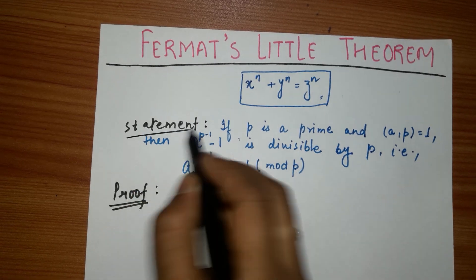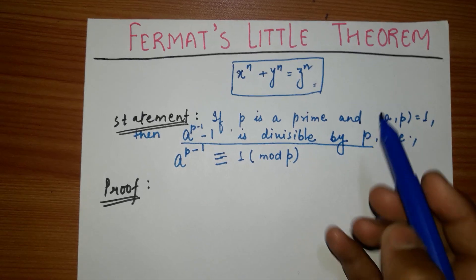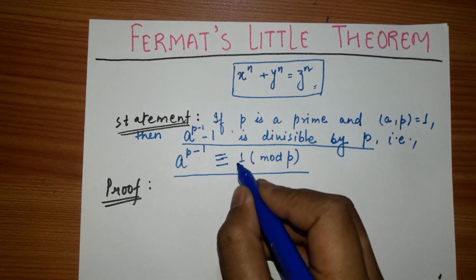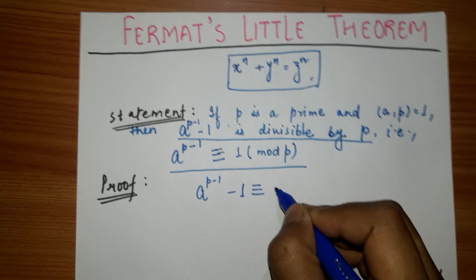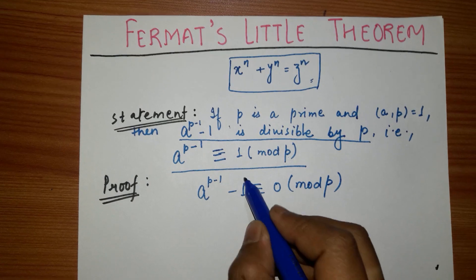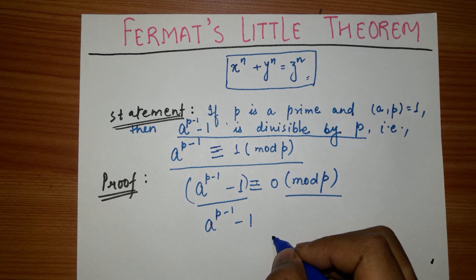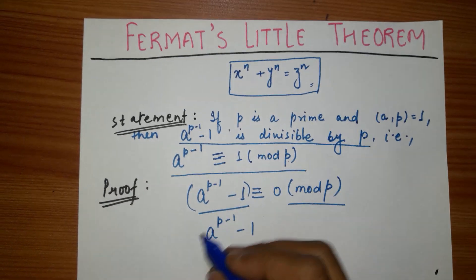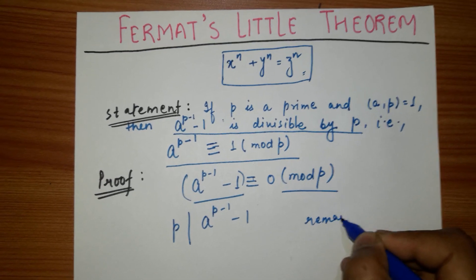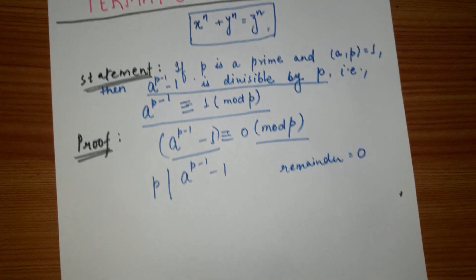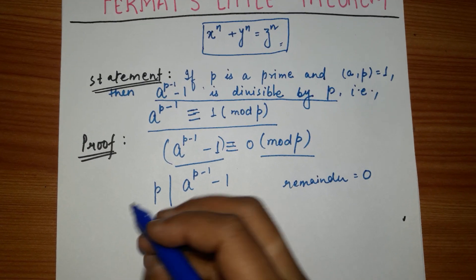Let me clarify what the statement means. The congruence a^(p−1) ≡ 1 (mod p) means that if we subtract 1 from both sides, we get a^(p−1) − 1 ≡ 0 (mod p). In other words, a^(p−1) − 1 must be divisible by p — when p divides this number, the remainder is 0.